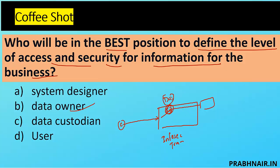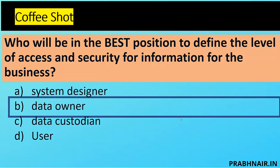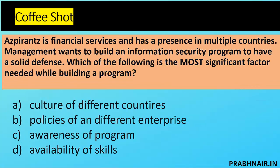The client defines what protections they require — strong encryption and so on. The security team ensures the protection of data, making them the data custodian. The customer is the user. The best position to define the level of access and security is the data owner, because they know the value and classification of the data. Data owner is accountable; data custodian is responsible. So the answer is B — data owner.